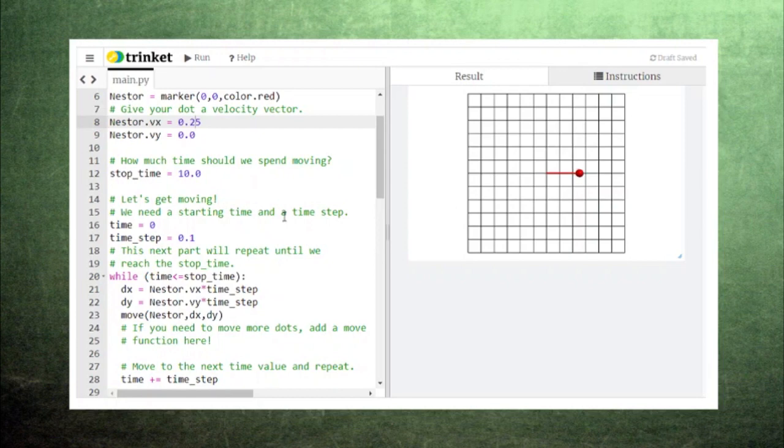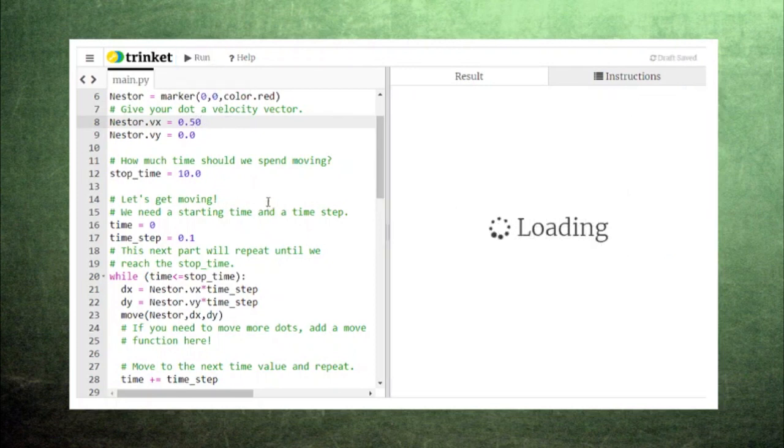Each of these jumps is one frame in the animation or one pass around the loop. If we increase the x-component of Nestor's velocity, he will move across the screen faster.